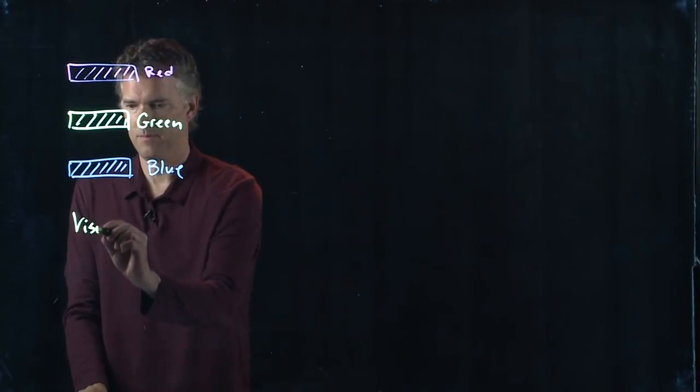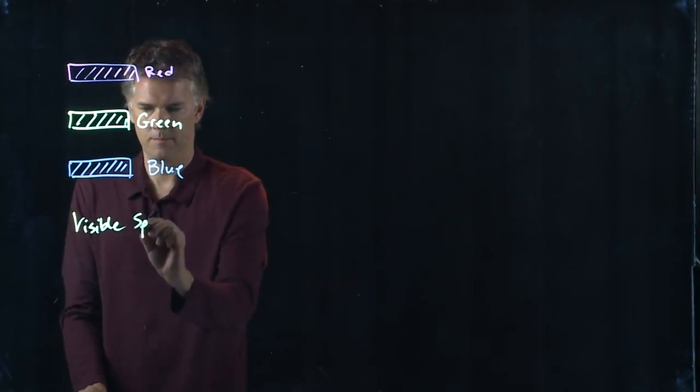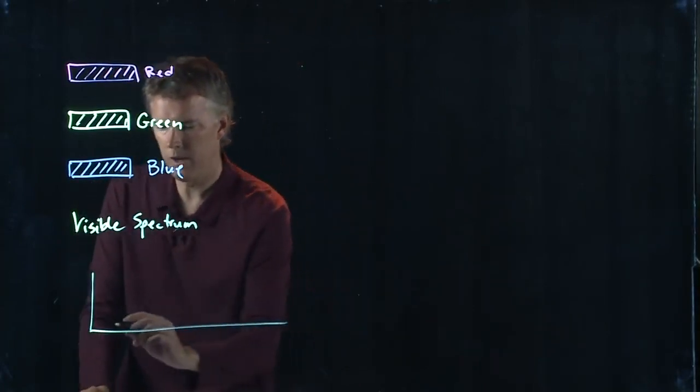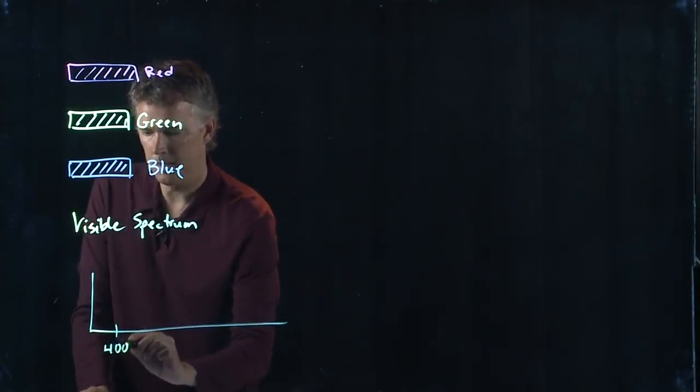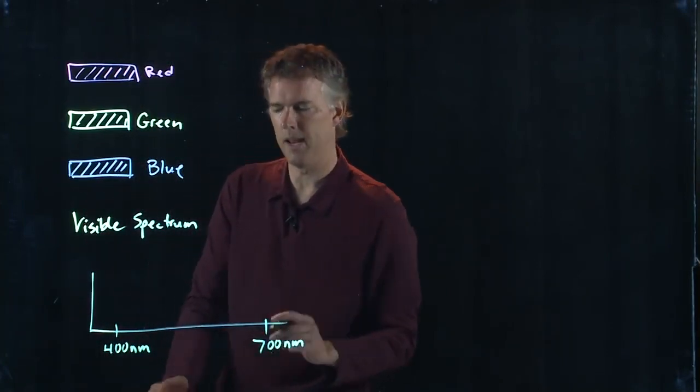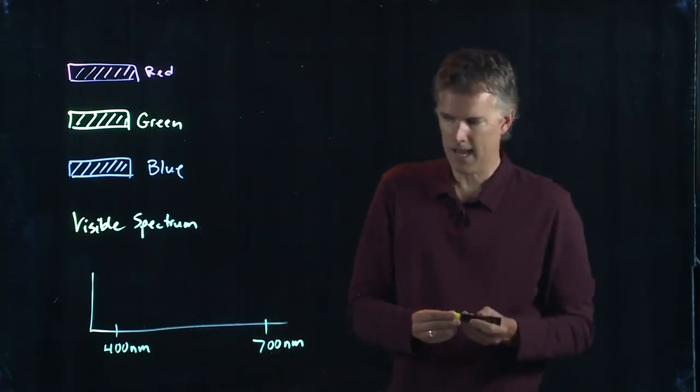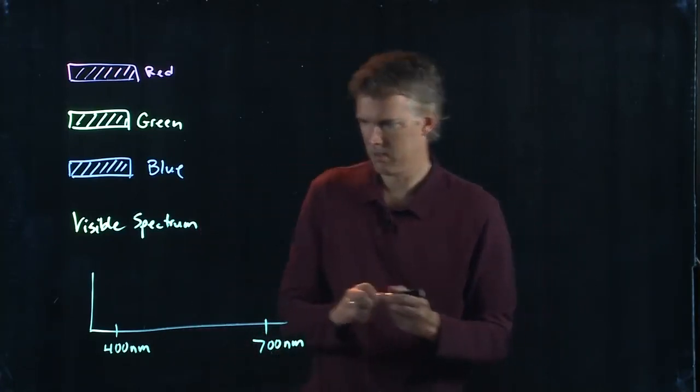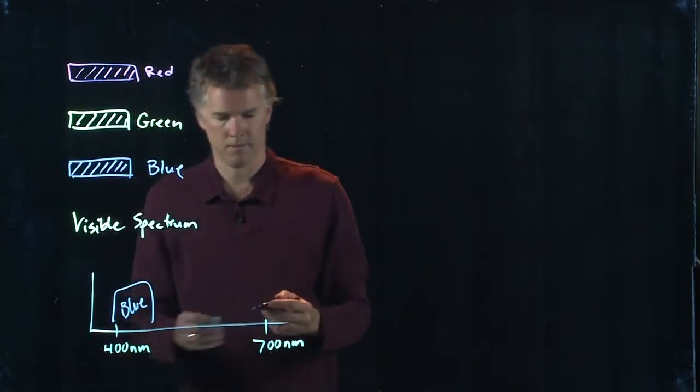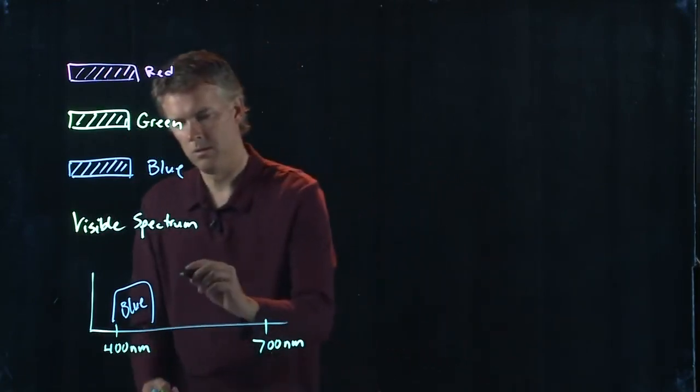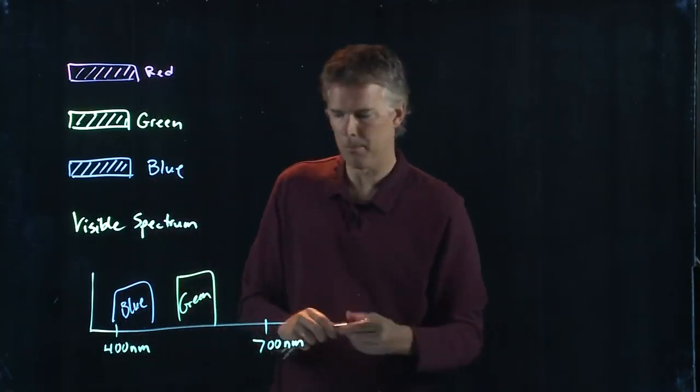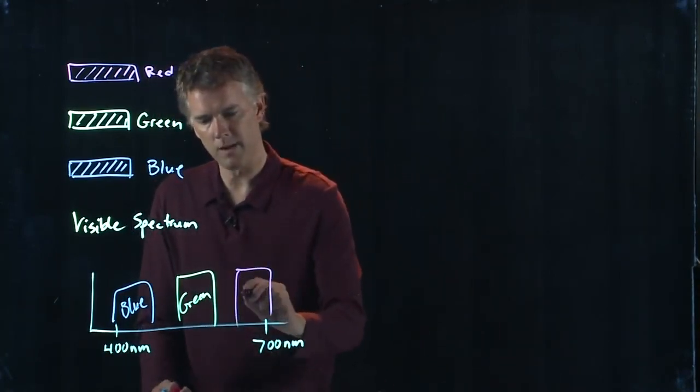The visible spectrum goes from about 400 nanometers up to about 700 nanometers. At the low end we've got blues, somewhere in the middle we've got greens, and somewhere up above we've got reds.